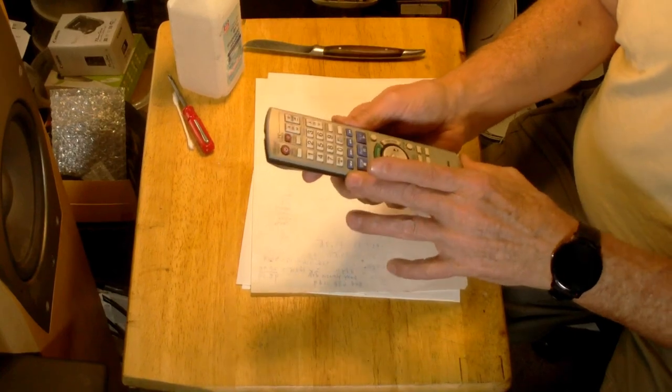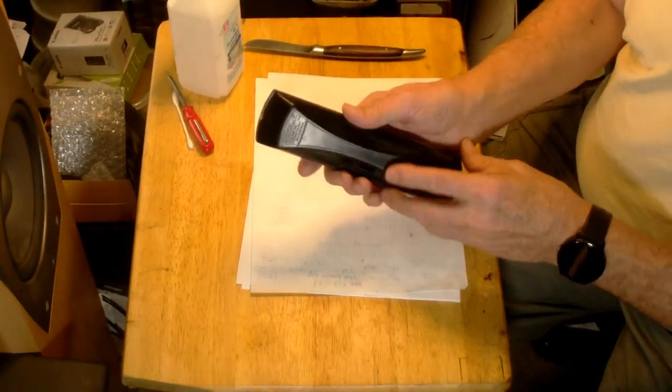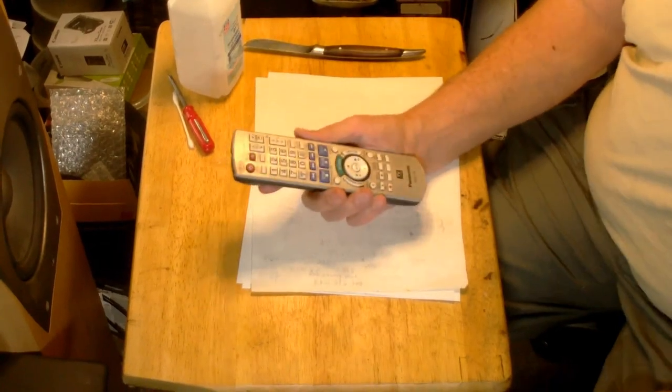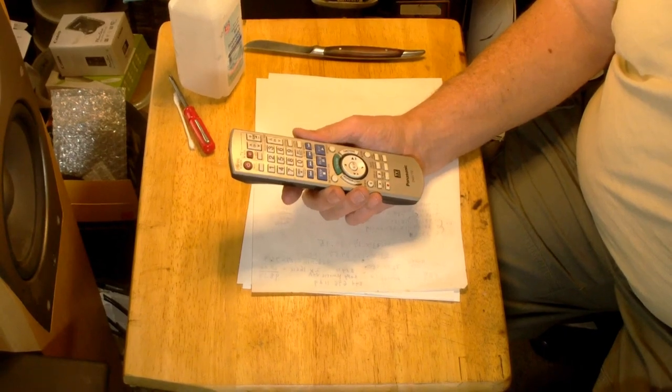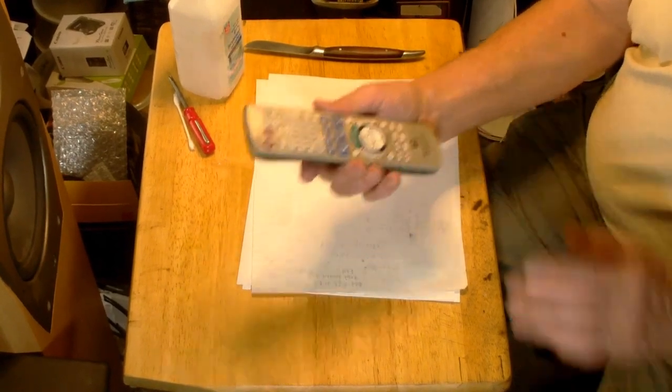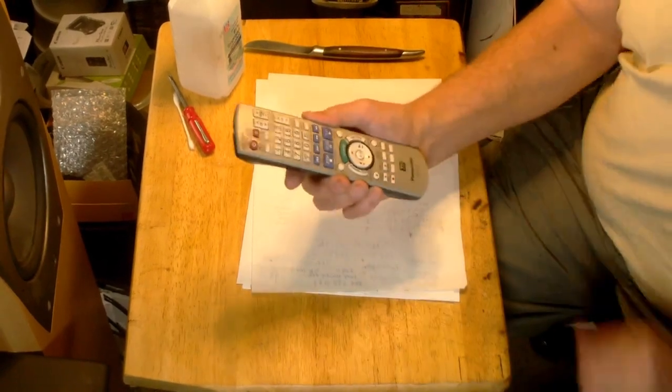We're going to recondition this remote. Now of course there are many different remotes, and you can certainly get yourself a universal remote for ten, fifteen dollars, and they're great if you can figure out the codes to control your devices with them.